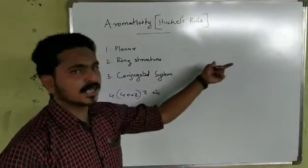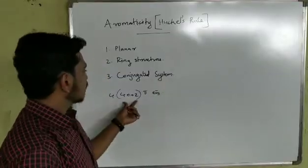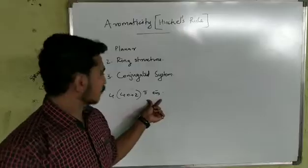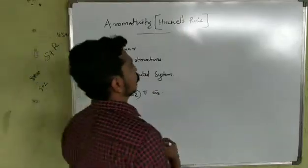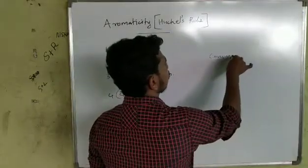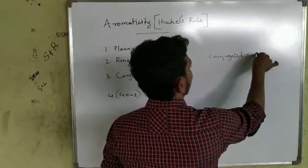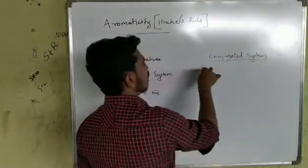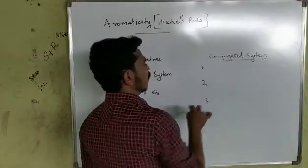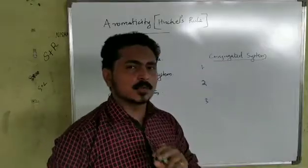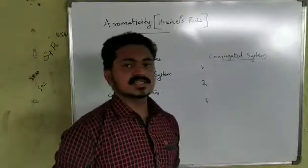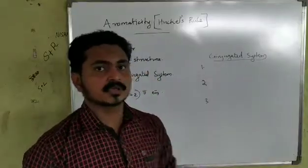The third condition is that the system must be a conjugated system. What is a conjugated system? There are 3 types of conjugated systems. If a compound satisfies any of these 3 types, that compound is a conjugated system.